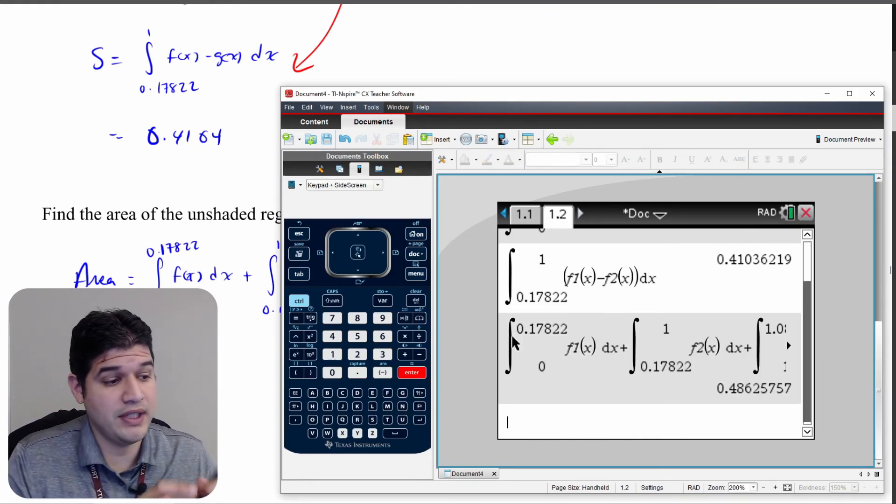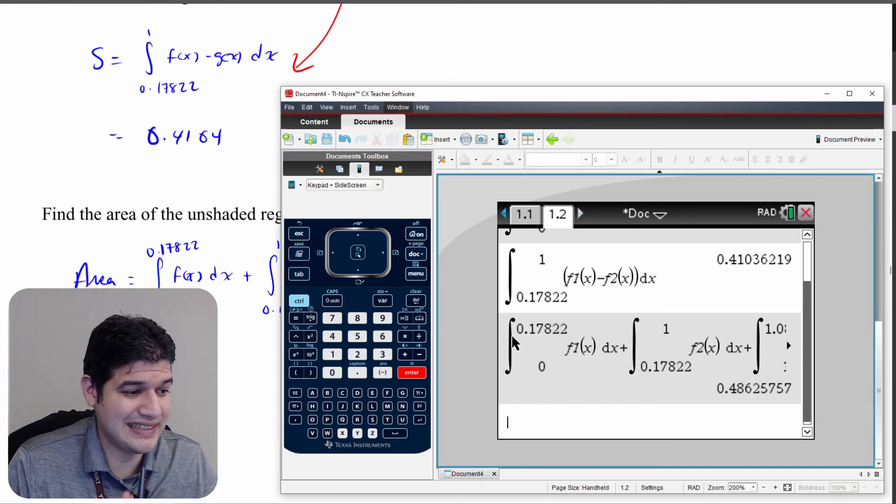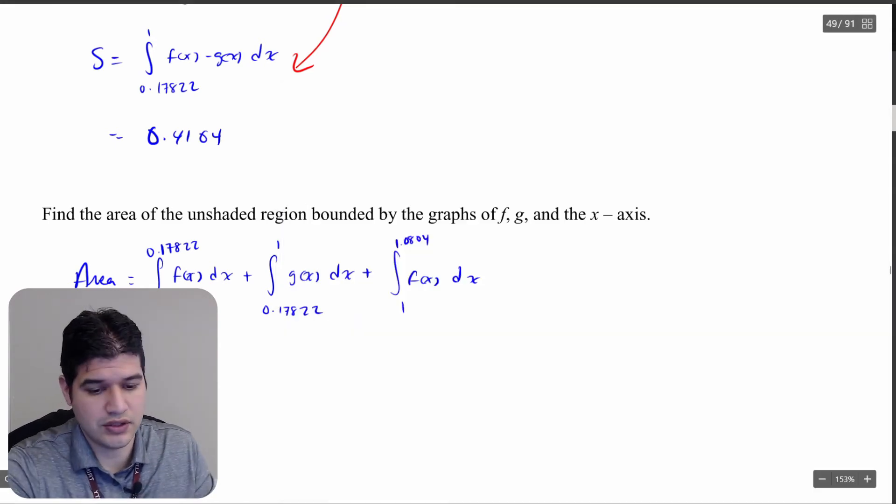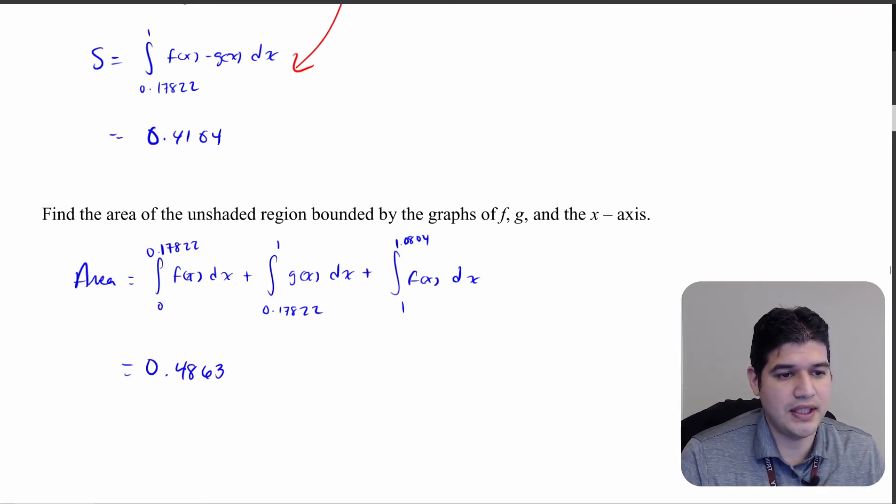All right. And after typing it all into the calculator, you can see all the decimals we're getting. We're getting 0.4863. So let's write that out: 0.4863. And that right there is going to be our final answer.